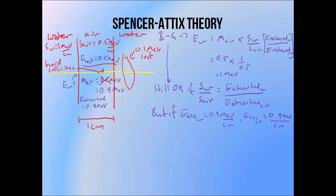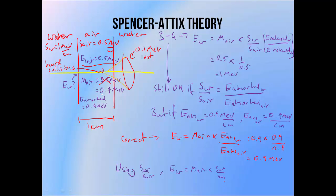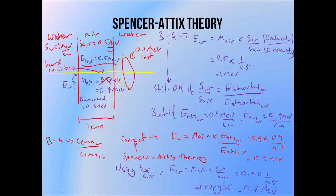If we instead use the ratio of energy absorbed per centimeter in the two media — slightly different from the normal Bragg-Gray approach which uses collision stopping powers — we get 0.9 MeV, the theoretically correct result. Using the collision stopping power ratio instead gives a slightly lower, incorrect result. So using the ratio of energy absorbed in the two media is the basis of Spencer-Attix cavity theory. Spencer-Attix is essentially the same as Bragg-Gray, except instead of a collision stopping power ratio, we use the ratio of energy absorbed in the two media, which is slightly more accurate.